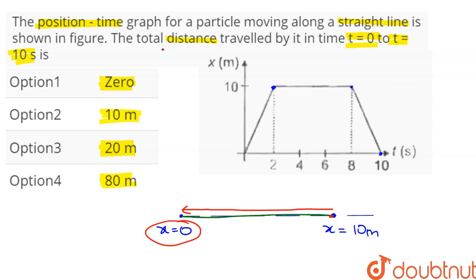Now since we are asked about the total distance, not the displacement—because if we were asked about displacement, then since the initial and final position are at x equal to 0, displacement would have been 0.